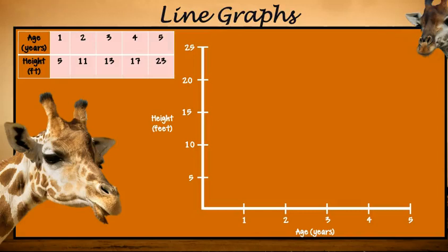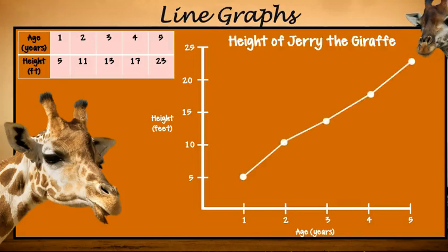Next, we want to plot the points: 1-5, 2-11, 3-13, 4-17, and 5-23 on our graph. Make sure all those dots are connected. Always make sure you label the title of your graph. You want to label what units you're using, and make sure you have your scale on there.